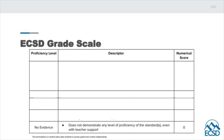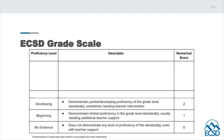The ECSD grade scale describes how students will be graded at all proficiency levels. A level 1 is beginning, in which students need teacher assistance to understand concepts and skills. Students may demonstrate a developing understanding, in which proficiency in some simpler concepts and skills is demonstrated, but students are still working on others.